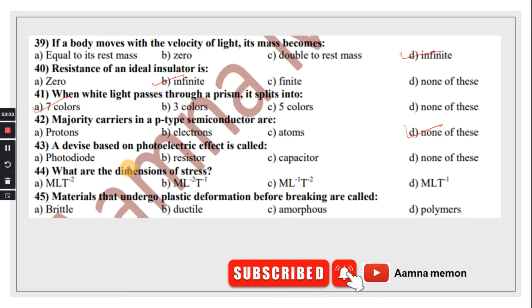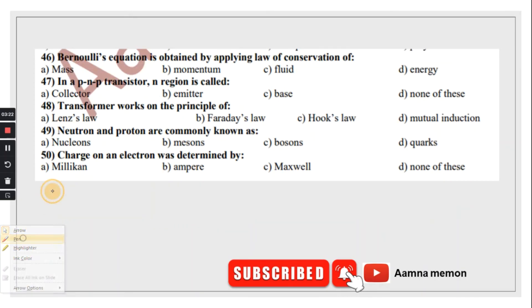A device based on photoelectric effect is called photodiode. Stress dimension is M, L^-1, T^-2. Option C is correct. Materials that undergo plastic deformation before breaking are called ductile. Bernoulli's equation is obtained by applying law of conservation of energy. Option D is correct.